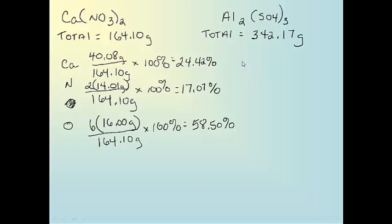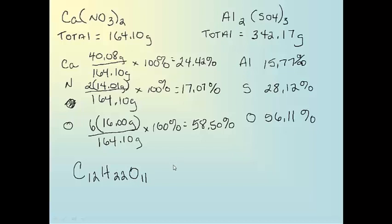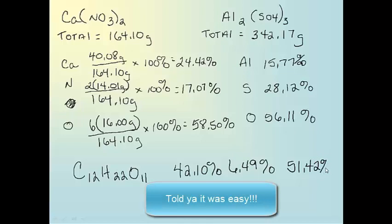And since I'm running out of room, I'm going to let you figure it out. I'm just going to give you the answers for the aluminum and the sulfur and the oxygen in aluminum sulfate. You should get 15.77%, 28.12%, and 56.11%. Then the last one I want you to do on your own also is sucrose. Sucrose is table sugar. And the formula is C12, H22, and O11. And your answers in order should be 42.10, 6.49% for the hydrogen, and 51.42%. And that is percent by mass review. Nice and simple.